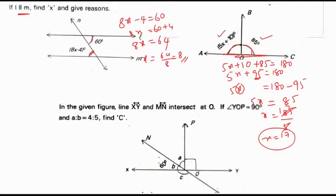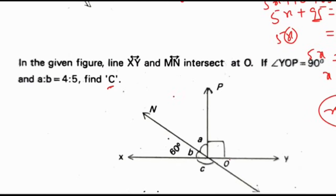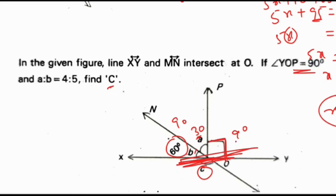Let us see how to do this diagram-based question. Find C. We need to find C here. This is a right angle, which is given in the question. This angle is 60 degrees. Obviously this one becomes 30 degrees — because 60 plus 30 is 90. 90 plus 90 is 180, so it is a linear pair on a straight angle of 180. So angle A is 30 degrees.